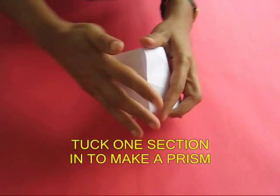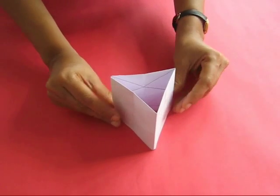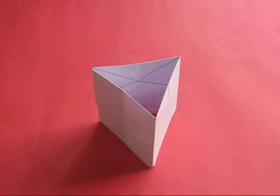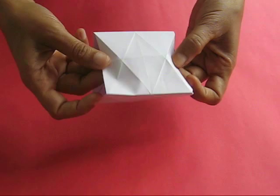With these six sections we make a very nice prismatic shape, a kind of a triangular roof. This is a triangular roof and you can see that there are half diamonds on both the ends.